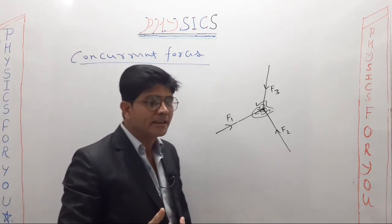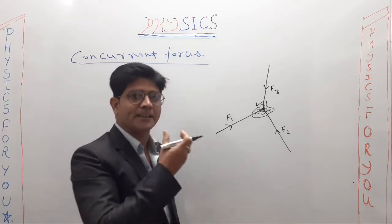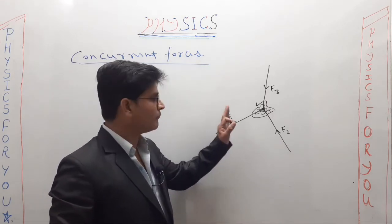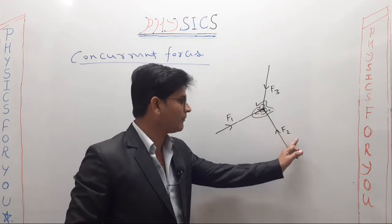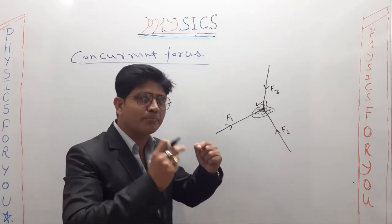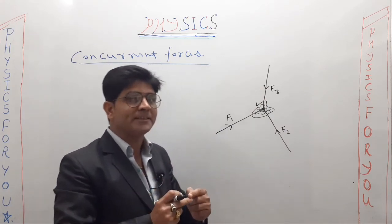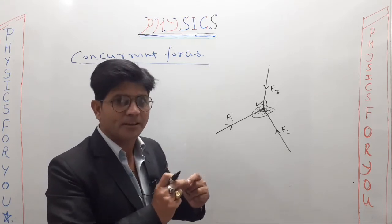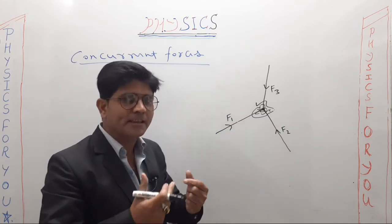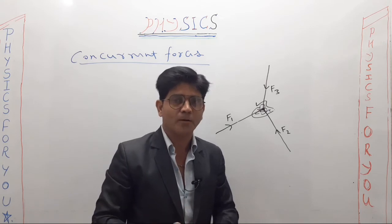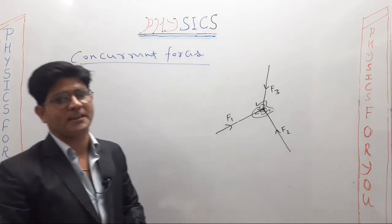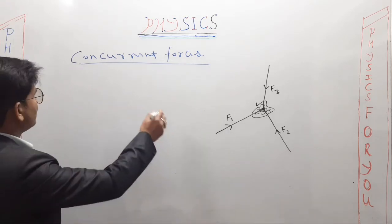We've talked about three forces. One thing visible in this diagram is that the line of action of force F1, the line of action of force F2, and the line of action of force F3 are all meeting at a single point — that single point is the center of mass of the body. So all their lines of action are meeting at a single point. Forces whose lines of action meet at a single point on a body are called concurrent forces.